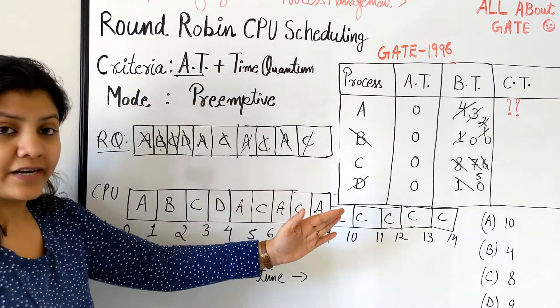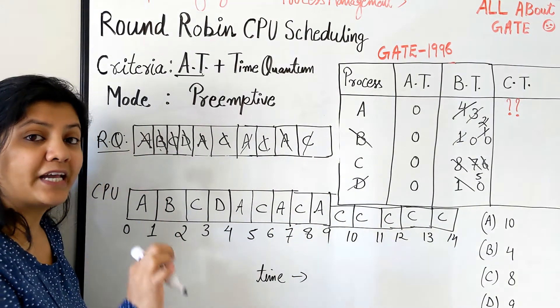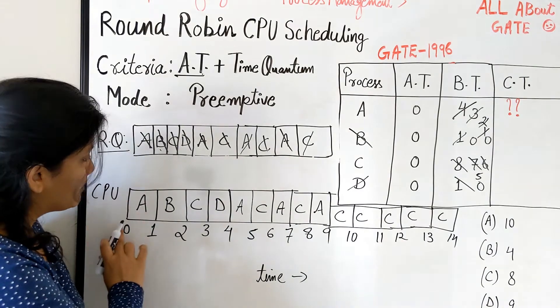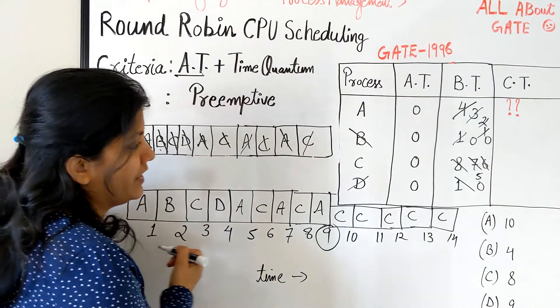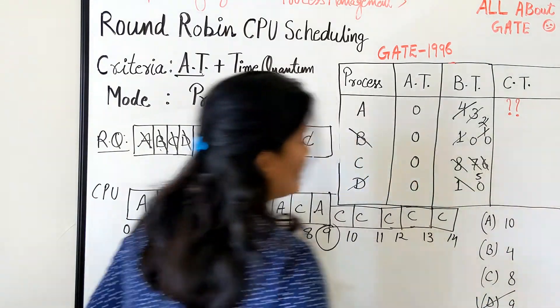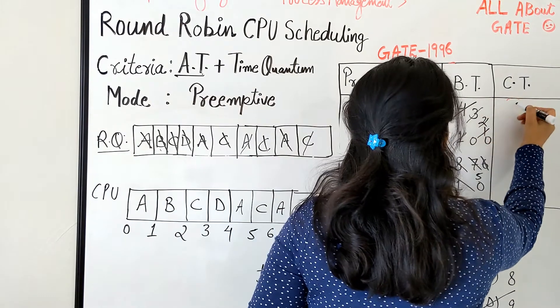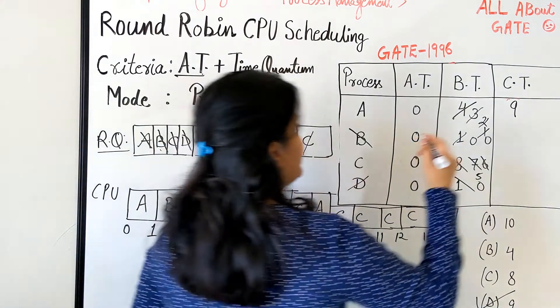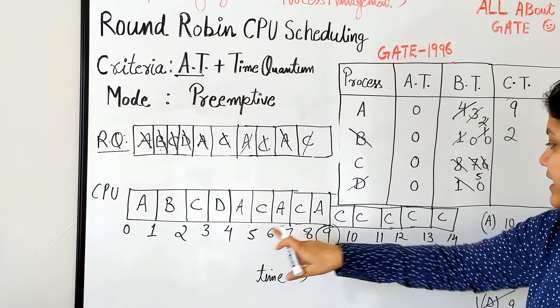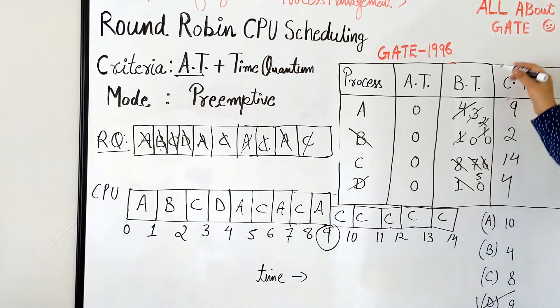So now you have the complete Gantt chart available with you and the question is asking one simple thing, what is the completion time of A. So completion time of A you need to see the end of A. So this is what the completion time of A. So that is 9 and if you can see the option, the option is D, 9 time quantum or 9 units. So this is the completion time of A. If you want we can find out for everyone. B is completing at 2, C completed at 14 and D finished at 4. So this is exactly what the completion time for each of the processes is.